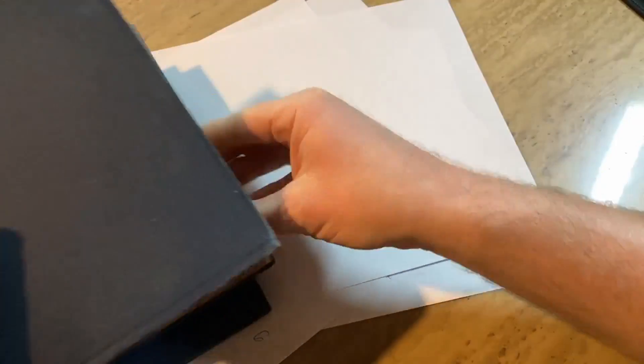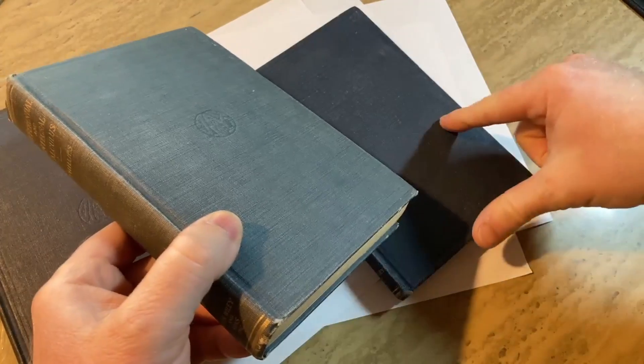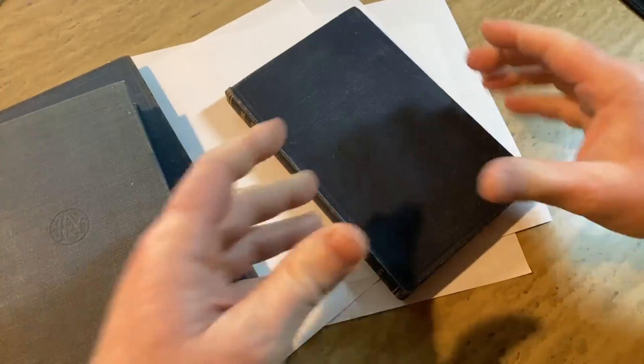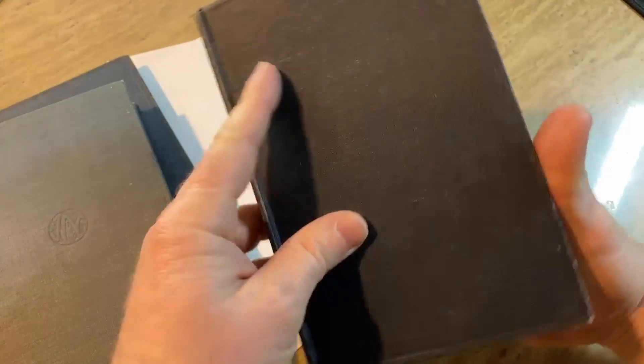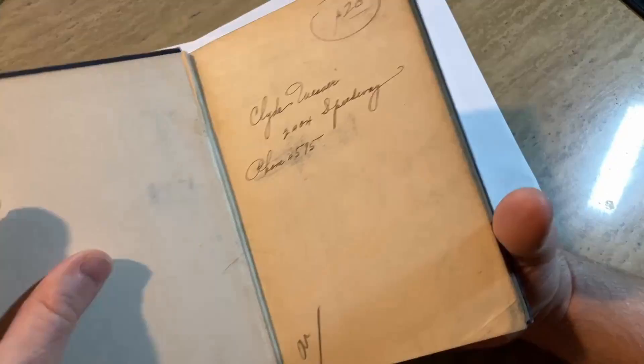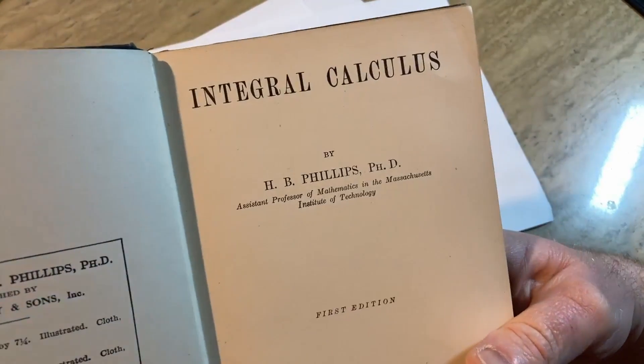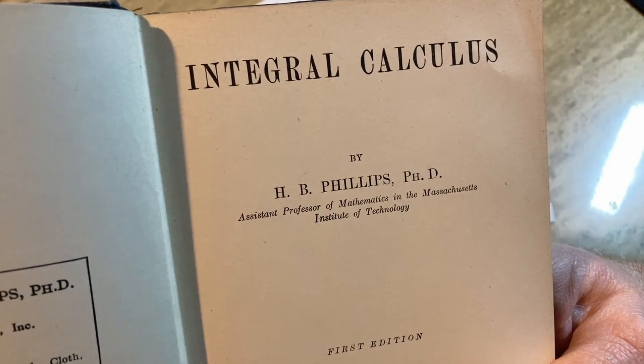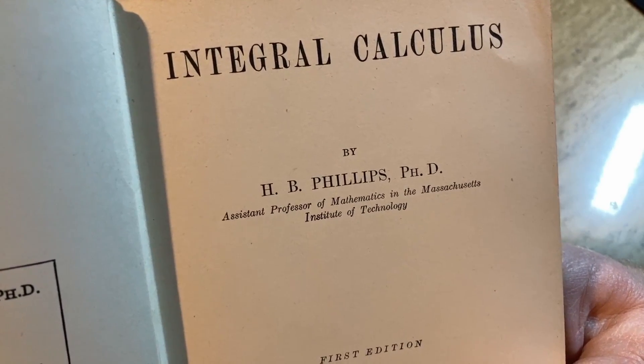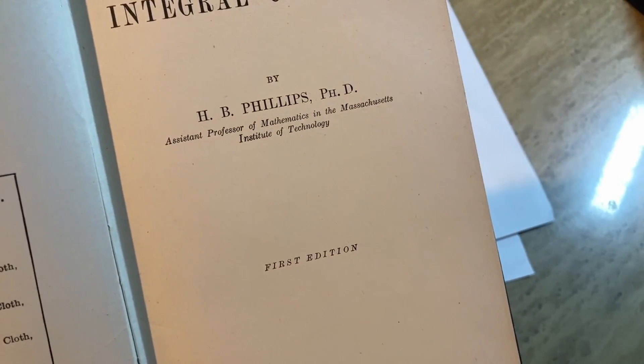Let's start with the integral calculus book. This book here contains both integral and differential. I think you can get the differential calculus separately as well. I just own the integral calculus separately and then the combined version. So yeah, it's kind of cool, these books are pretty rare. Integral Calculus by H.B. Phillips, PhD, Assistant Professor of Mathematics in the Massachusetts Institute of Technology, first edition. What a cool book, this is awesome.